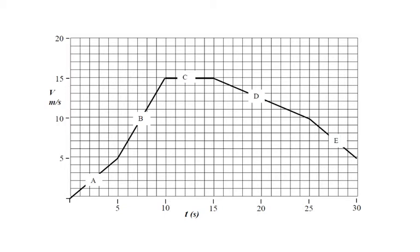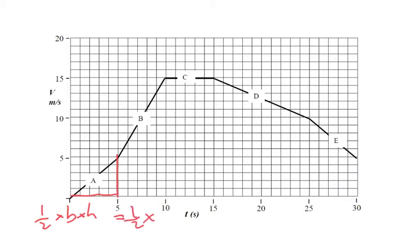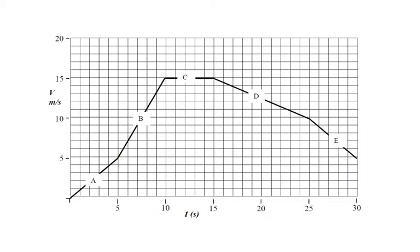Firstly, how do you find the distance traveled? On a velocity-time graph, all you need to do is find the area under the graph. For section A, we have a triangle, so we use half times the base times the height. The base is 5 seconds and the height is 5 meters per second, so we get a half times 5 times 5, which is 25 divided by 2, giving us 12.5 meters. During the first 5 seconds, the object traveled 12.5 meters.